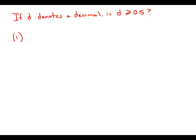Statement number one tells us when D is rounded to the nearest tenth, the result is 0.5.